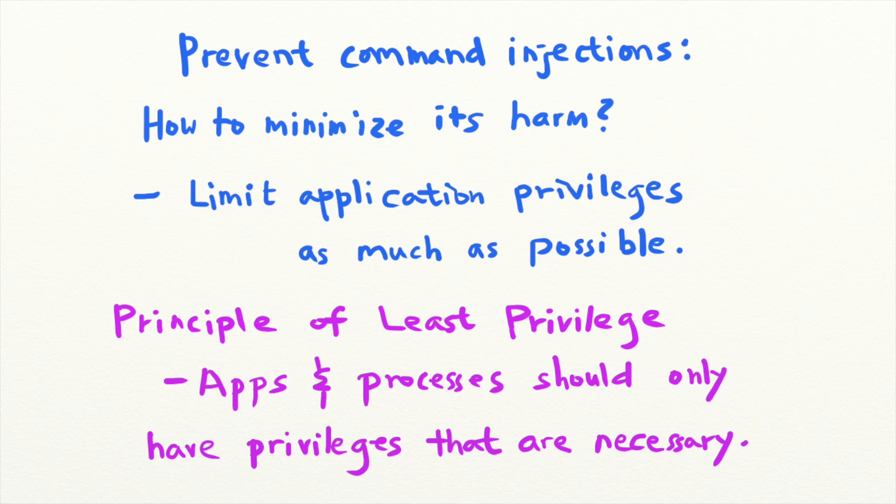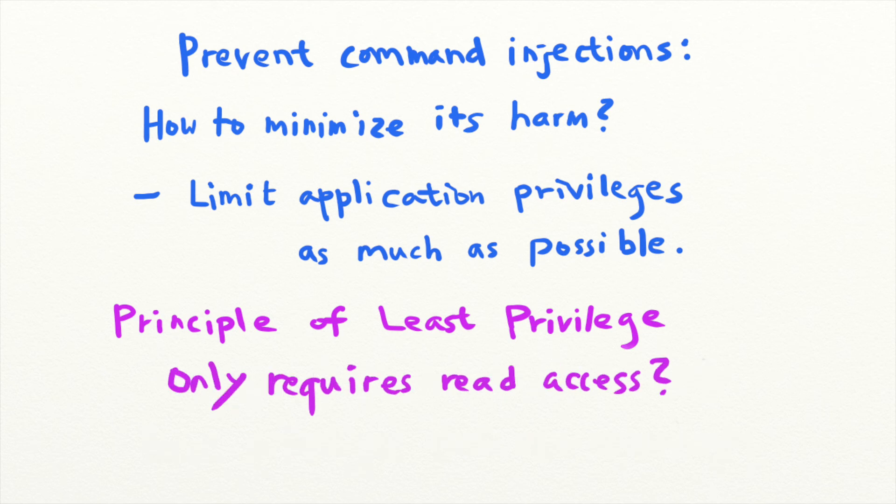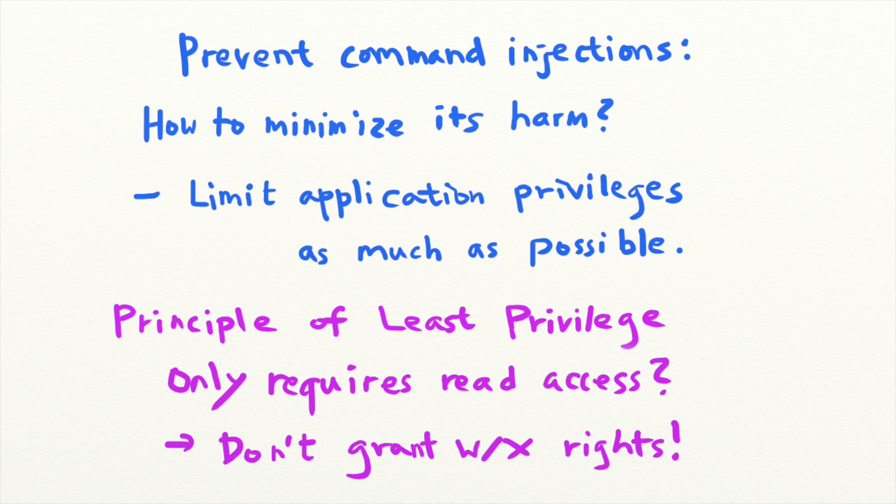For example, when a web application requires only read access to a file, it should not be granted any write or execute permissions. Because if an attacker hijacks an application that runs with high privilege, the attacker can gain its permissions. In this case, you should limit the privilege of the user running the web server so that attackers cannot use it to compromise the entire system.